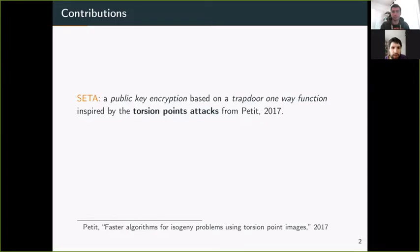A natural problem is to build new encryption schemes based on different problems. So our main contribution is CETA, a public key encryption scheme based on an injective trapdoor one-way function, which is inspired by an attack against SIDH variants called torsion point attacks, initially discovered by Petit at 2017 Asia Crypt.